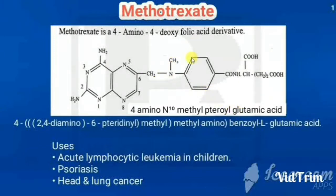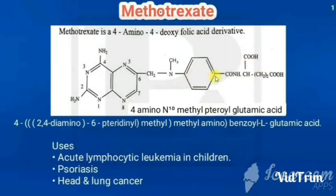Comparing methotrexate with folic acid: folic acid has a hydroxy group at the fourth position and does not have an amino group there. That is why methotrexate is called 4-amino, 4-deoxy — the hydroxy is absent. The benzene ring with the COOH is called benzoyl-L-glutamic acid. For the benzoyl group, the first through fourth positions are numbered, and the fourth position is where this substituent is attached.